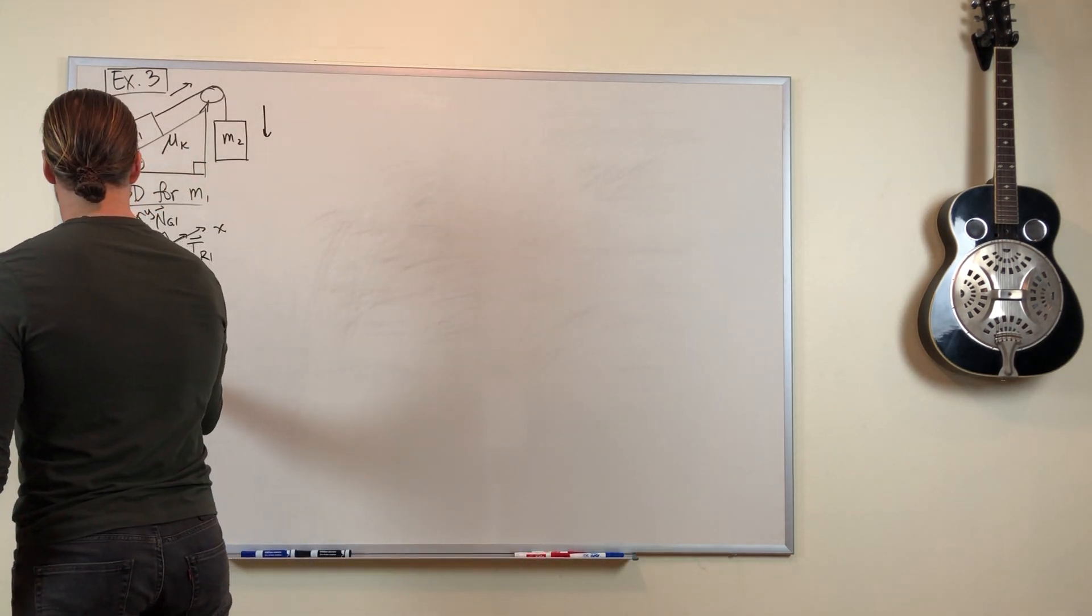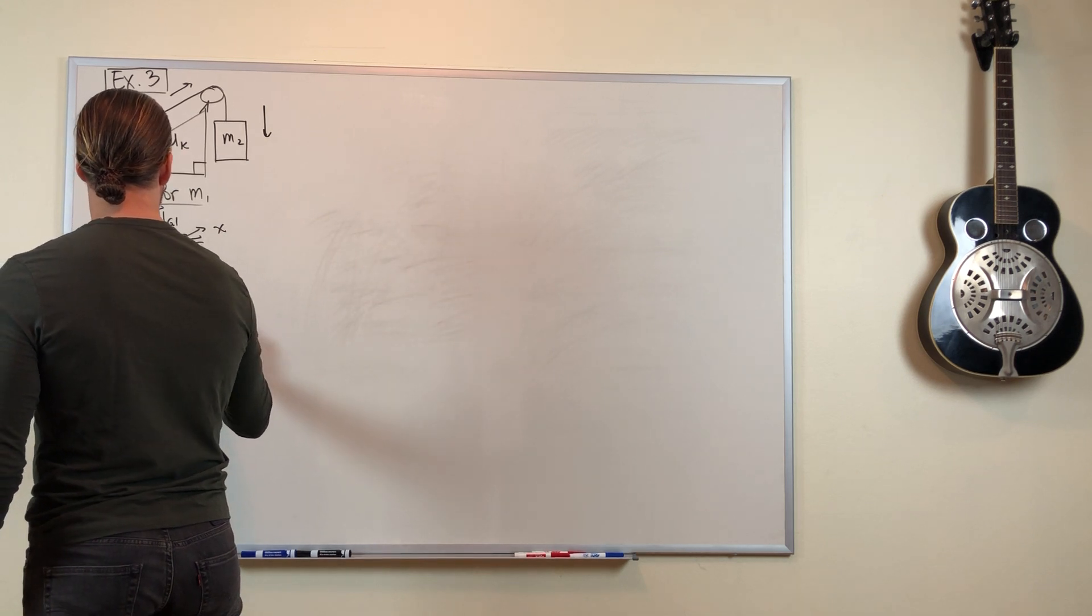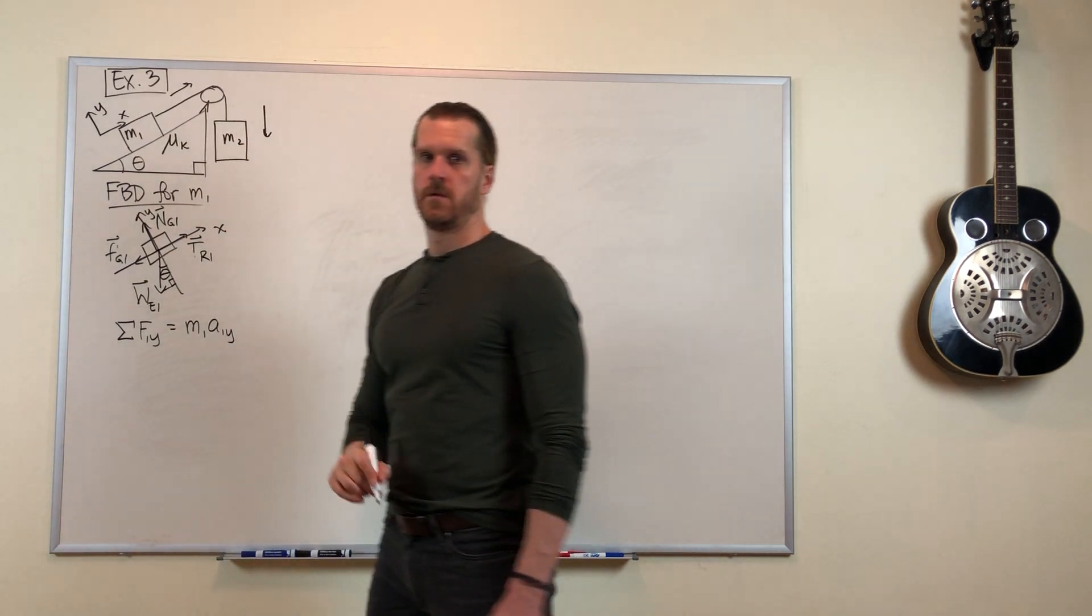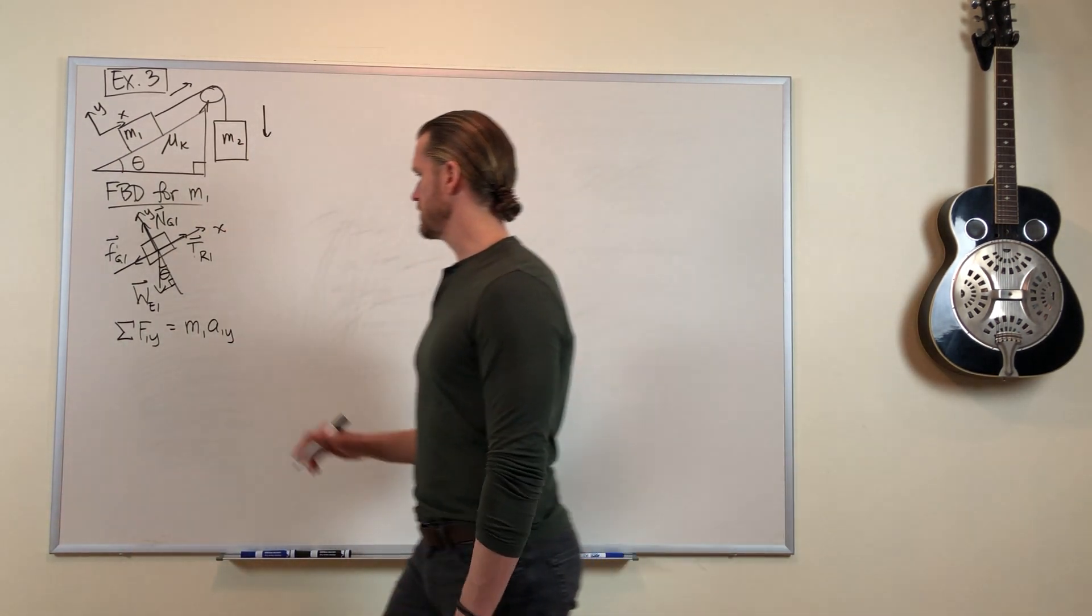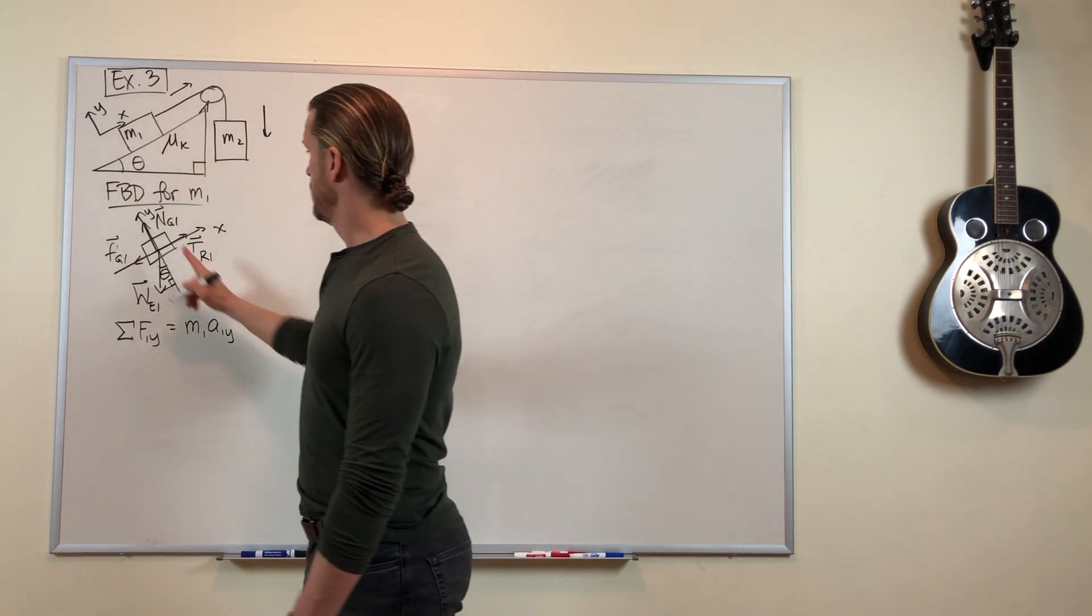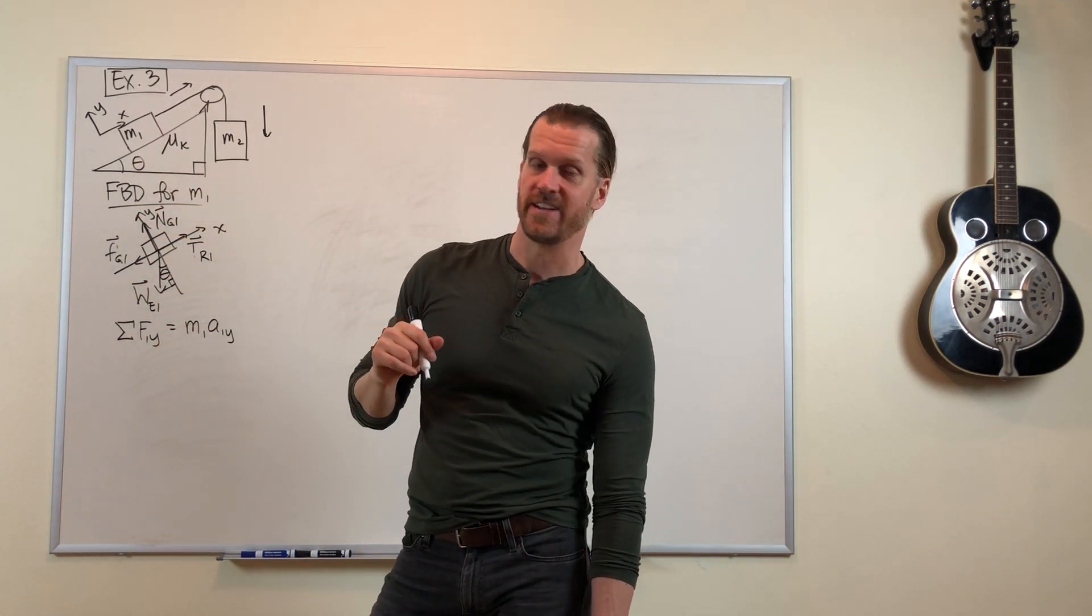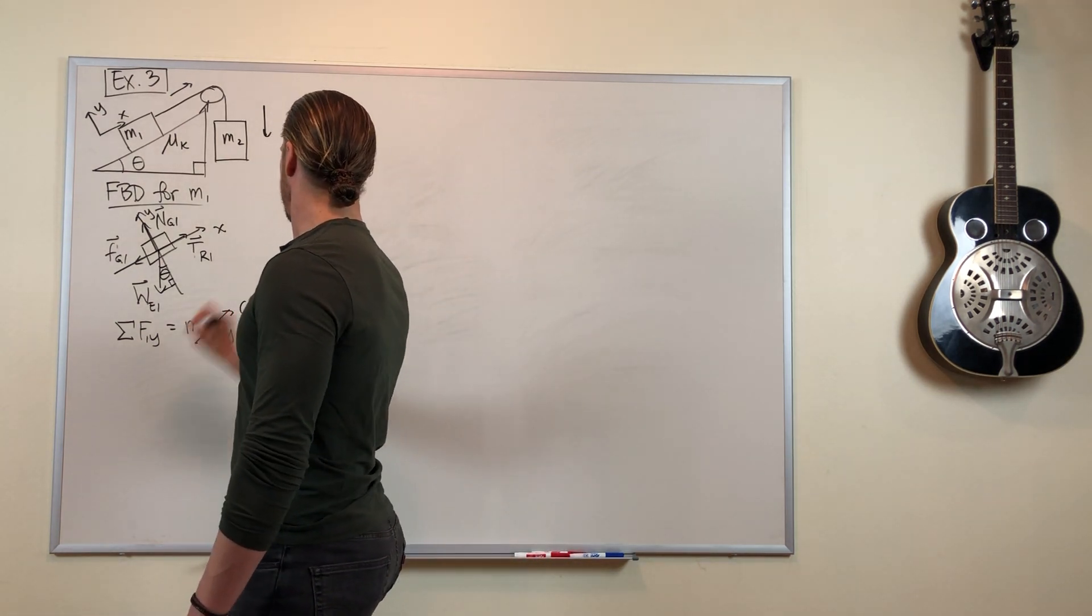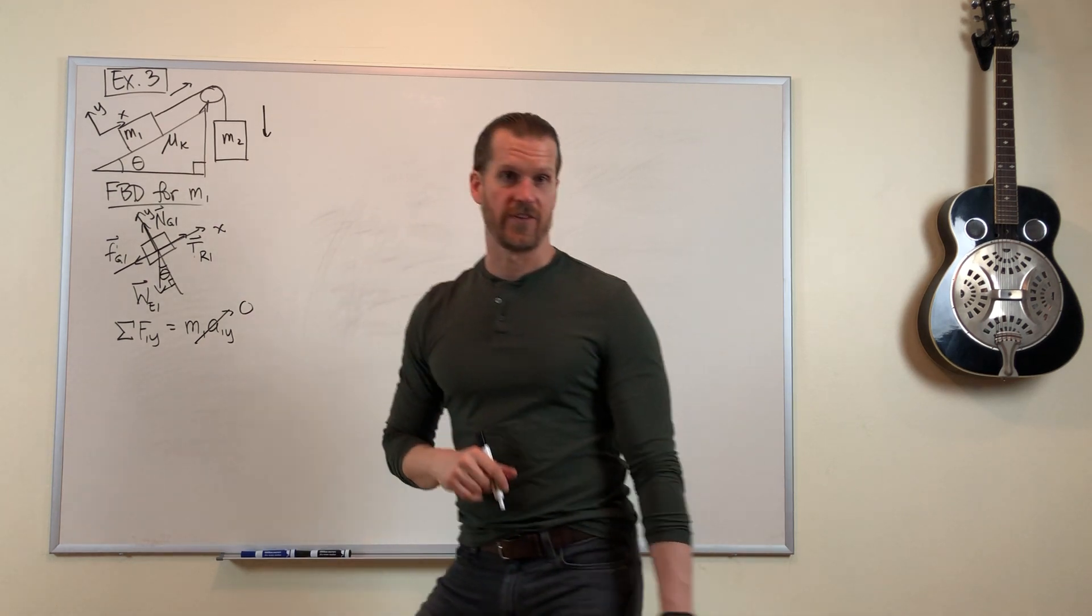So let's do Newton's second law for mass 1 in the y-direction. We need to do that so we can figure out the friction force. In the y-direction, mass 1 is not accelerating. The y-direction is perpendicular to that hill. The mass is not moving perpendicular to the hill, it's only moving up the hill. So we can say that the right-hand side of that equation is zero.